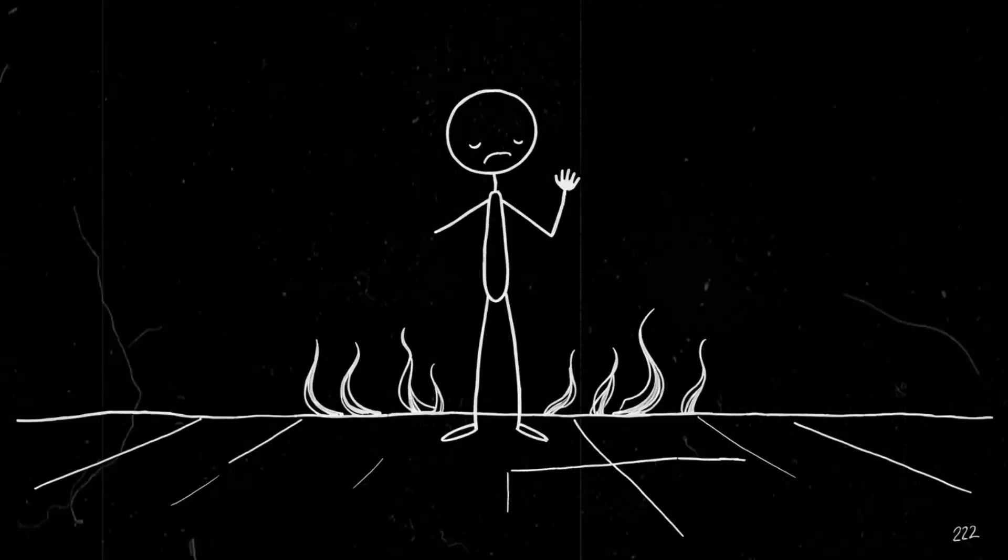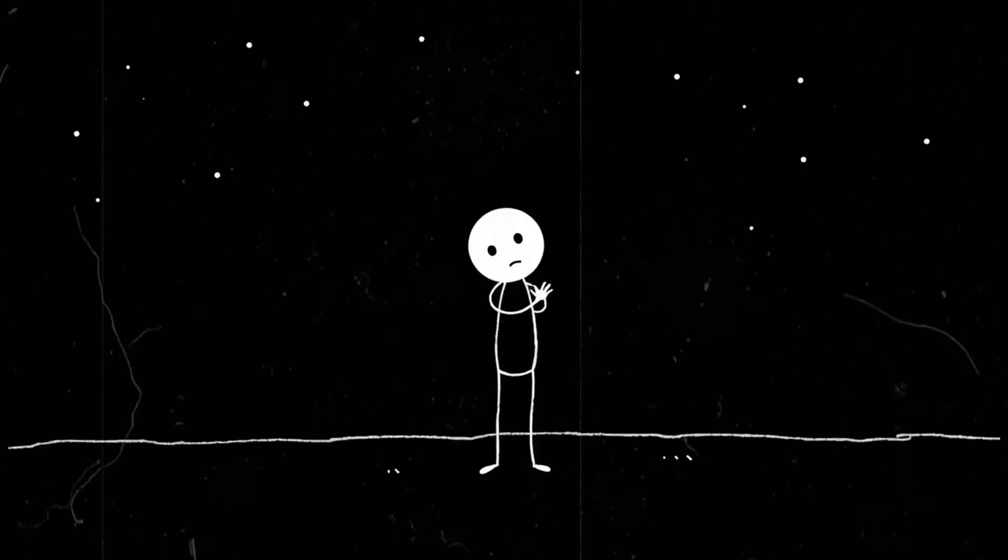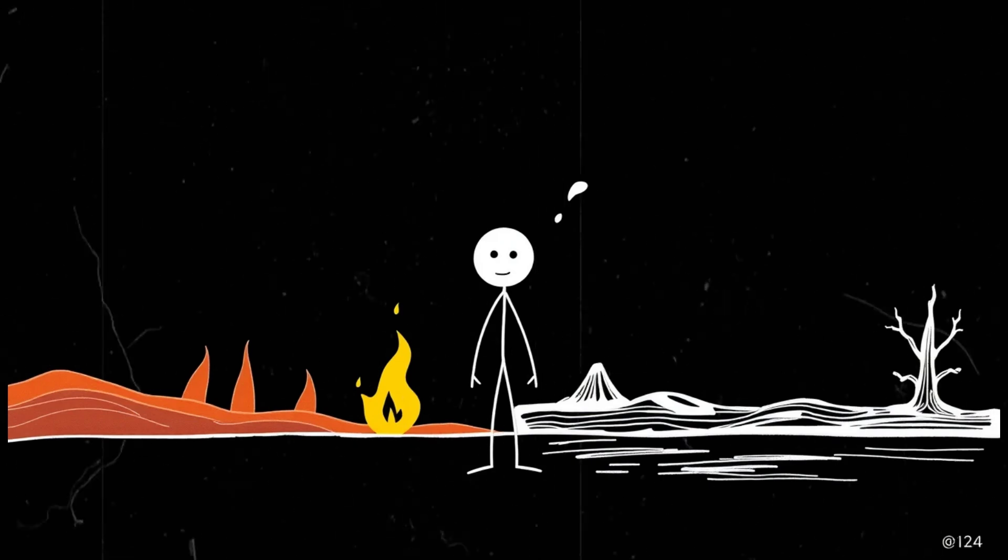Daytime? Boiling hot. With no clouds to reflect sunlight, the planet absorbs way more heat. Deserts become even more uninhabitable. Cities turn into concrete frying pans. Nighttime? Freezing cold. Without clouds to trap heat, all that warmth radiates straight into space. Even in normally mild areas, temperatures plummet at night. The result? A planet that's basically playing hot potato with extreme weather.